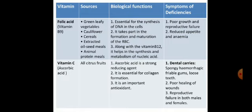Vitamin C, called ascorbic acid, is present in all citrus fruits such as lemons and sweet limes. Ascorbic acid is a strong reducing agent, essential for collagen formation, and an important antioxidant. Deficiency symptoms include spongy hemorrhagic gums, loose teeth, poor healing of wounds, and reproductive failure in both males and females.